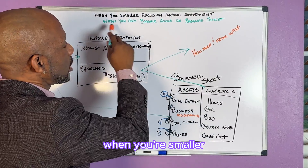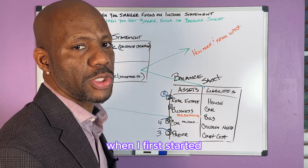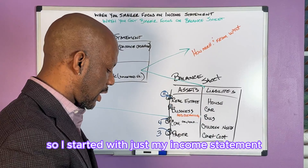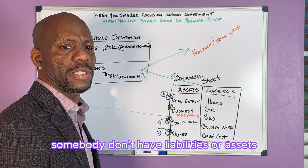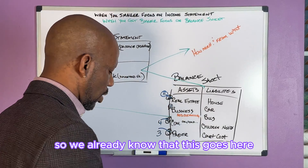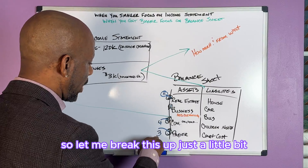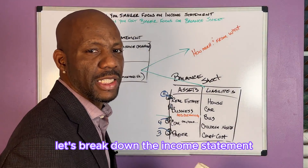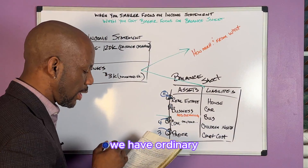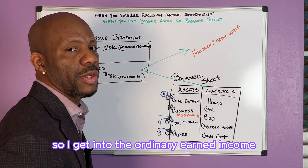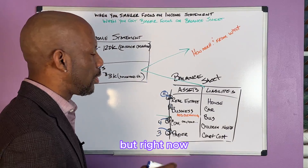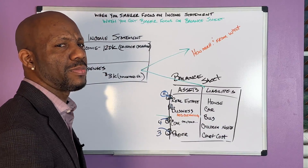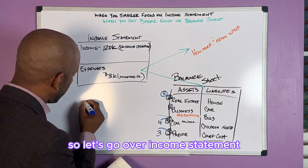When you're smaller, you focus on your income statement. When I first started, I didn't have any balances, assets, or liabilities, so I started with just my income statement. If someone doesn't have liabilities or assets, just start with your income statement. We have ordinary earned income — I'll get into that a little later — but right now we're just talking about the income statement and balance sheet.